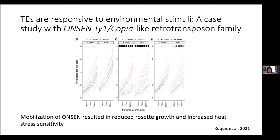There has been some research showing that TEs are responsive to environmental stress. One well-known example is the family called onsen, studied in Arabidopsis. Mobilization of onsen results in reduced rosette growth and increased heat stress sensitivity. In a study by Rokey et al. 2021, they compared rosette growth and heat stress responses in various Arabidopsis lines, some with high copy numbers of onsen throughout the genome. They observed that high copy lines were generally smaller and more sensitive to heat stress.